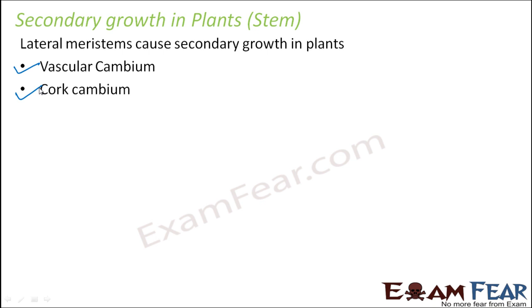In this section we will primarily take the example of a stem. Secondary growth happens in dicot stem. It also happens in dicot root, but we will primarily discuss dicot stem and see how the processes take place. The process remains almost the same even in the case of dicot root. So let us talk about vascular cambium first.